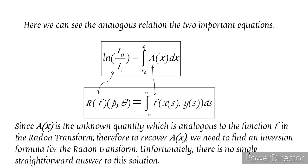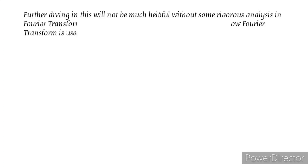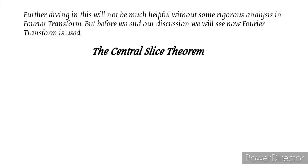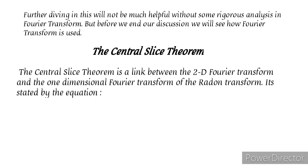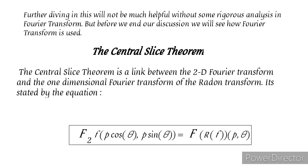Further diving in this will not be much helpful without some rigorous analysis in Fourier transform. But before we end our discussion we will see how Fourier transform is used. The relationship between Radon transform and Fourier transform is given by the central slice theorem. The central slice theorem is a link between the 2D Fourier transform and the one dimensional Fourier transform of the Radon transform. It's stated by the equation given below.